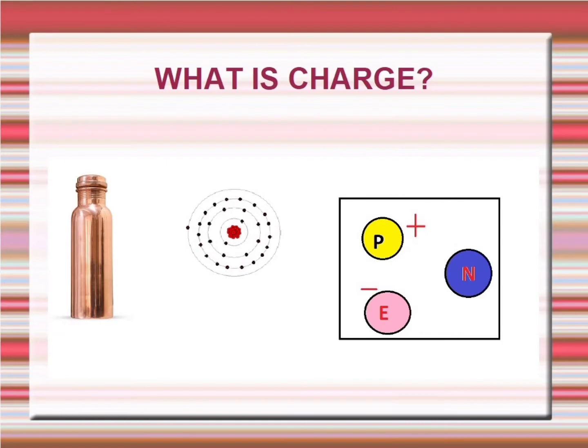After understanding atoms, it is important to understand how these protons, electrons, and neutrons help produce electric current. Proton is positive charge. Electron is negative charge. Neutron is neutral means no charge.